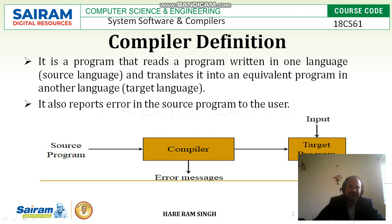With the diagram, you can see that the compiler is a set of programs. It takes the source program written by the user or programmer and converts it into the target program understood by the machine. If any error is present in the source program, the compiler will generate an error message. Some input is given to the target program, and the target program will generate the output.